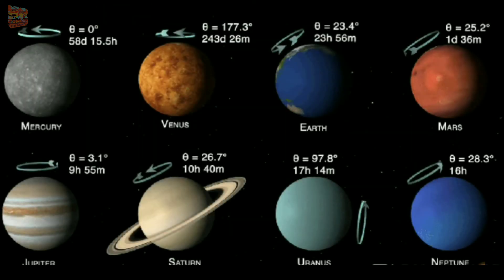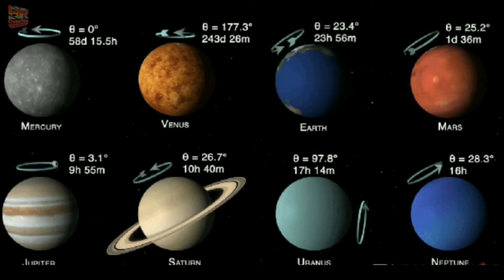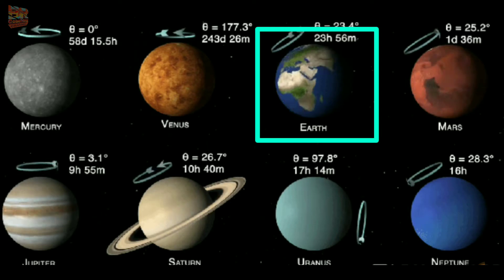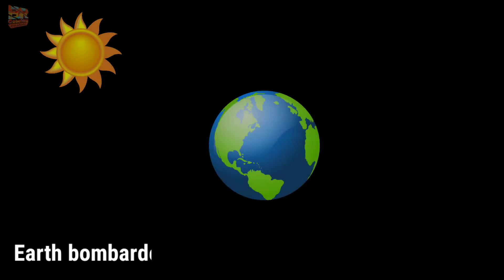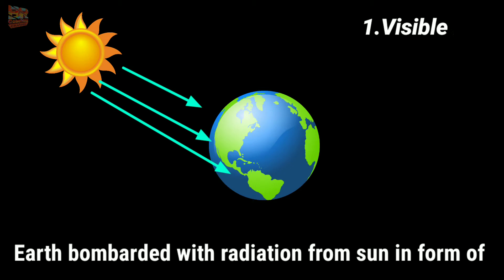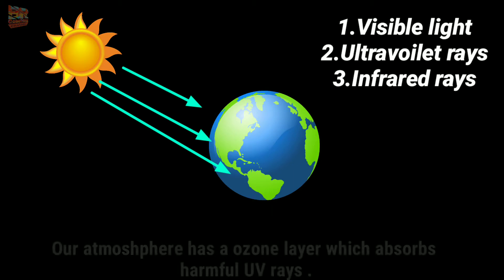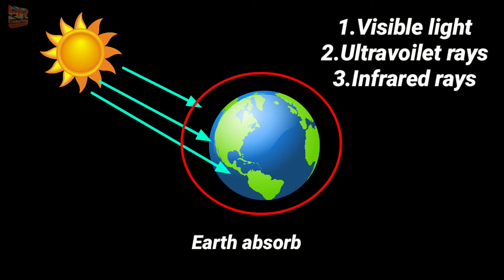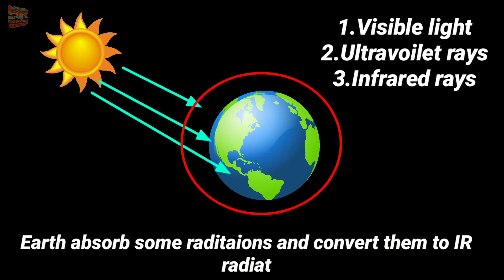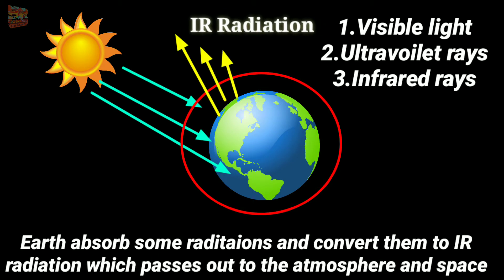Our solar system has a number of planets. Some planets are either too hot or too cold, but our Earth's surface has a relatively mild and stable temperature. The question arises: how is the temperature of the Earth maintained? Earth is bombarded with radiation from the sun in the form of visible light, ultraviolet rays, and infrared rays. Our atmosphere has an ozone layer which absorbs harmful UV rays. Earth absorbs some radiations and converts them to IR radiation, which passes out to the atmosphere and space.